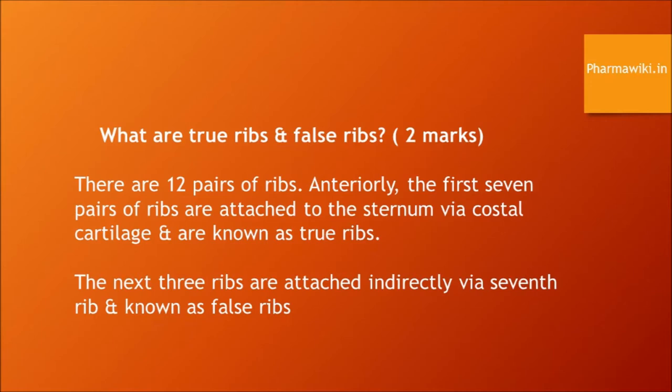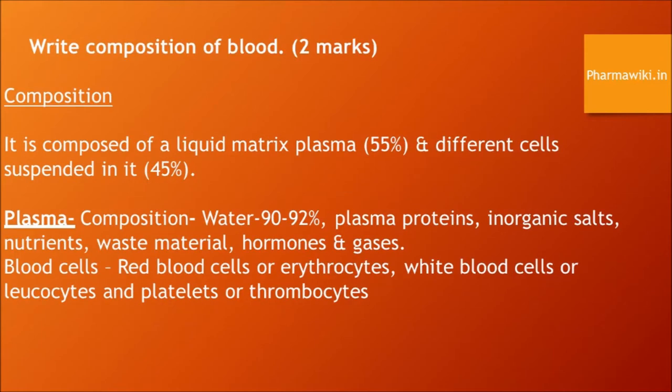Blood cells include red blood cells (erythrocytes), white blood cells (leukocytes), and platelets (thrombocytes).